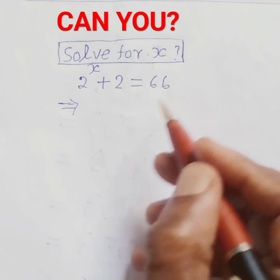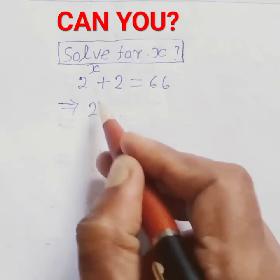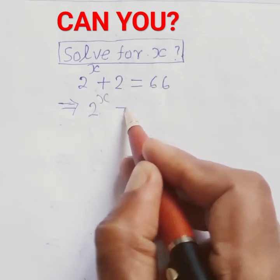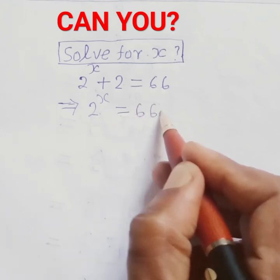These two transfer to the right side. Then it will be 2 to the power x is equal to 66 minus 2.